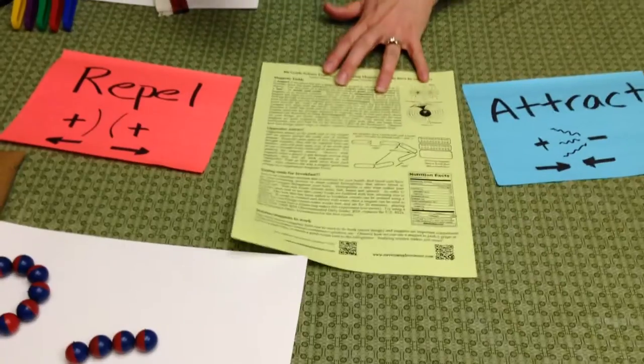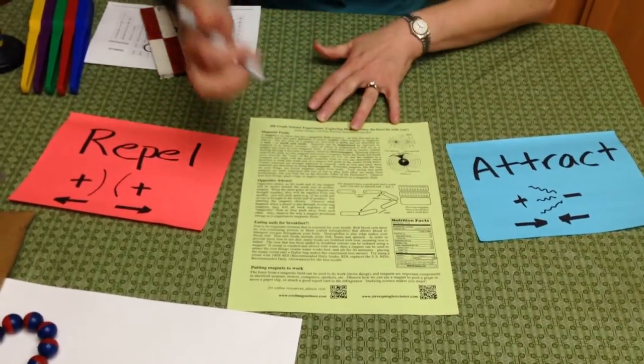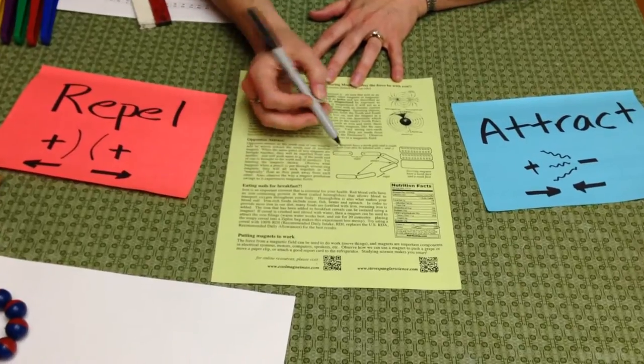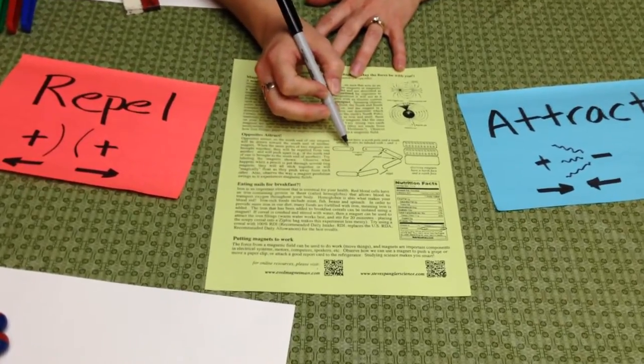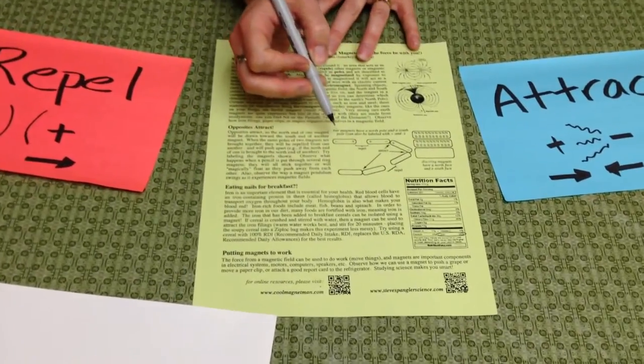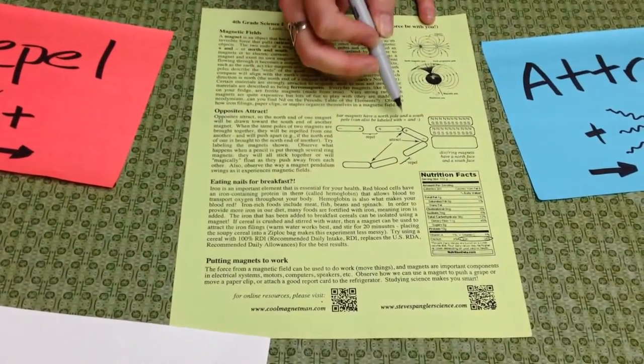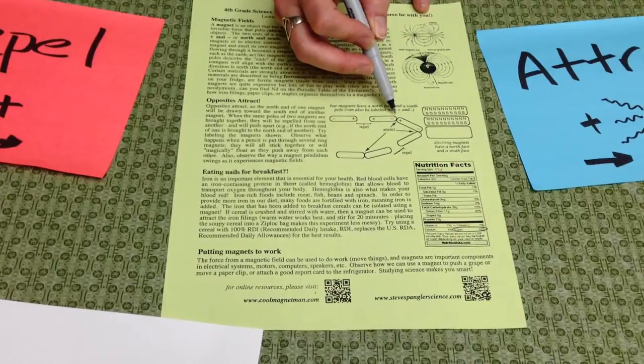We can have a worksheet here to imagine what it looks like when we bring two magnets together. Instead of coloring them, we could label the ends plus and minus. If we bring the two plus ends together, they will repel. If we bring a plus and minus end together, they can attract.